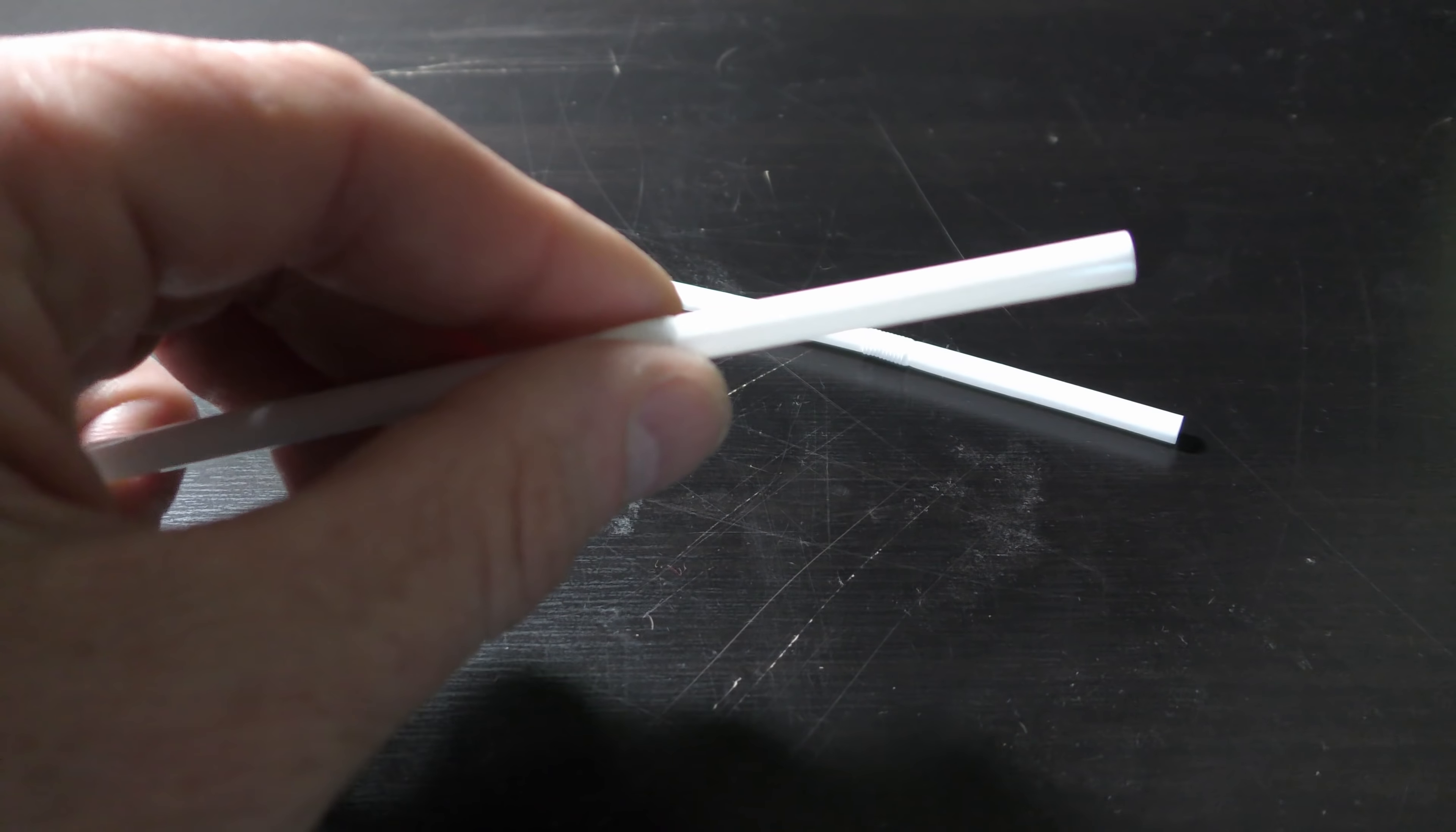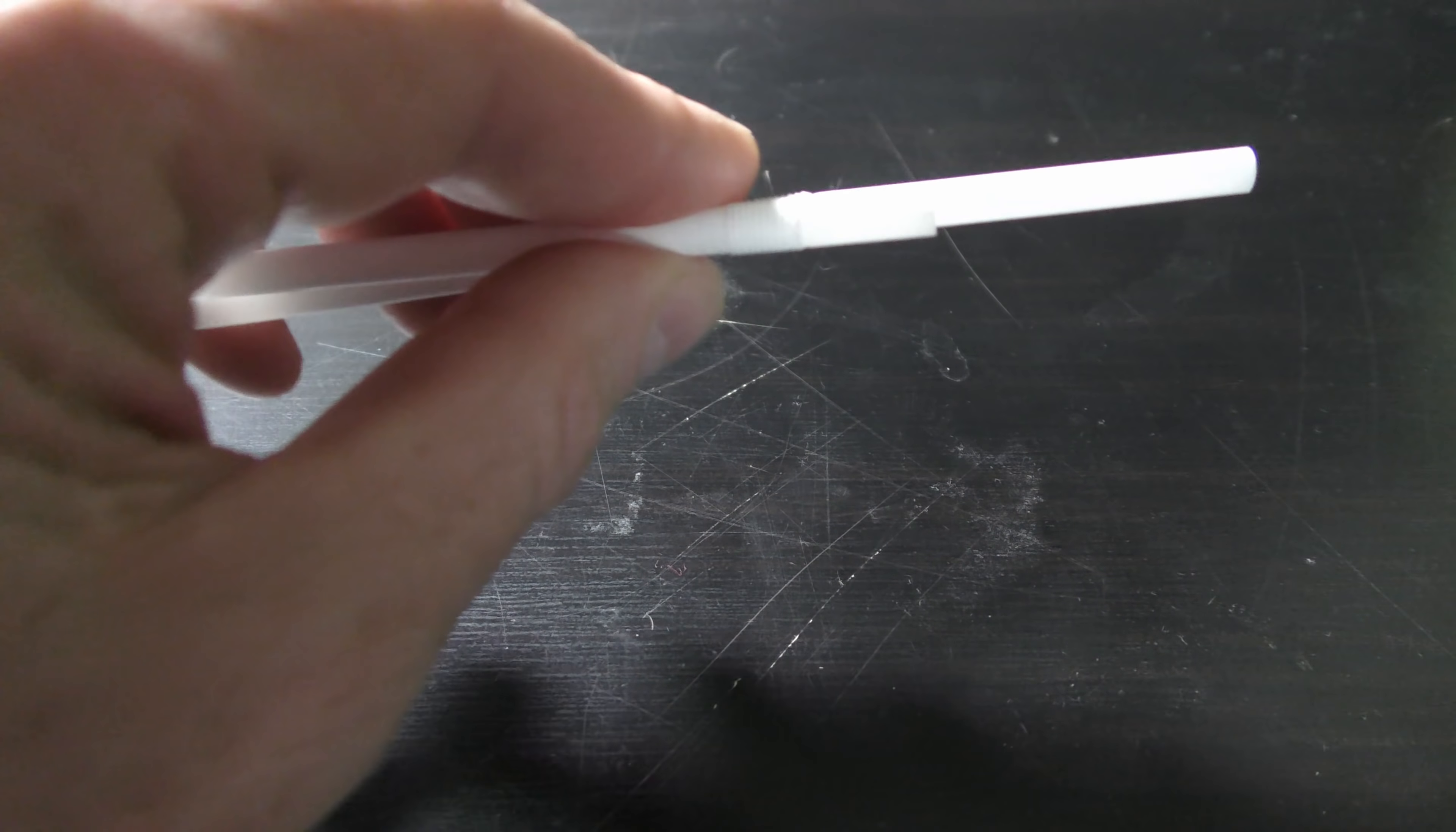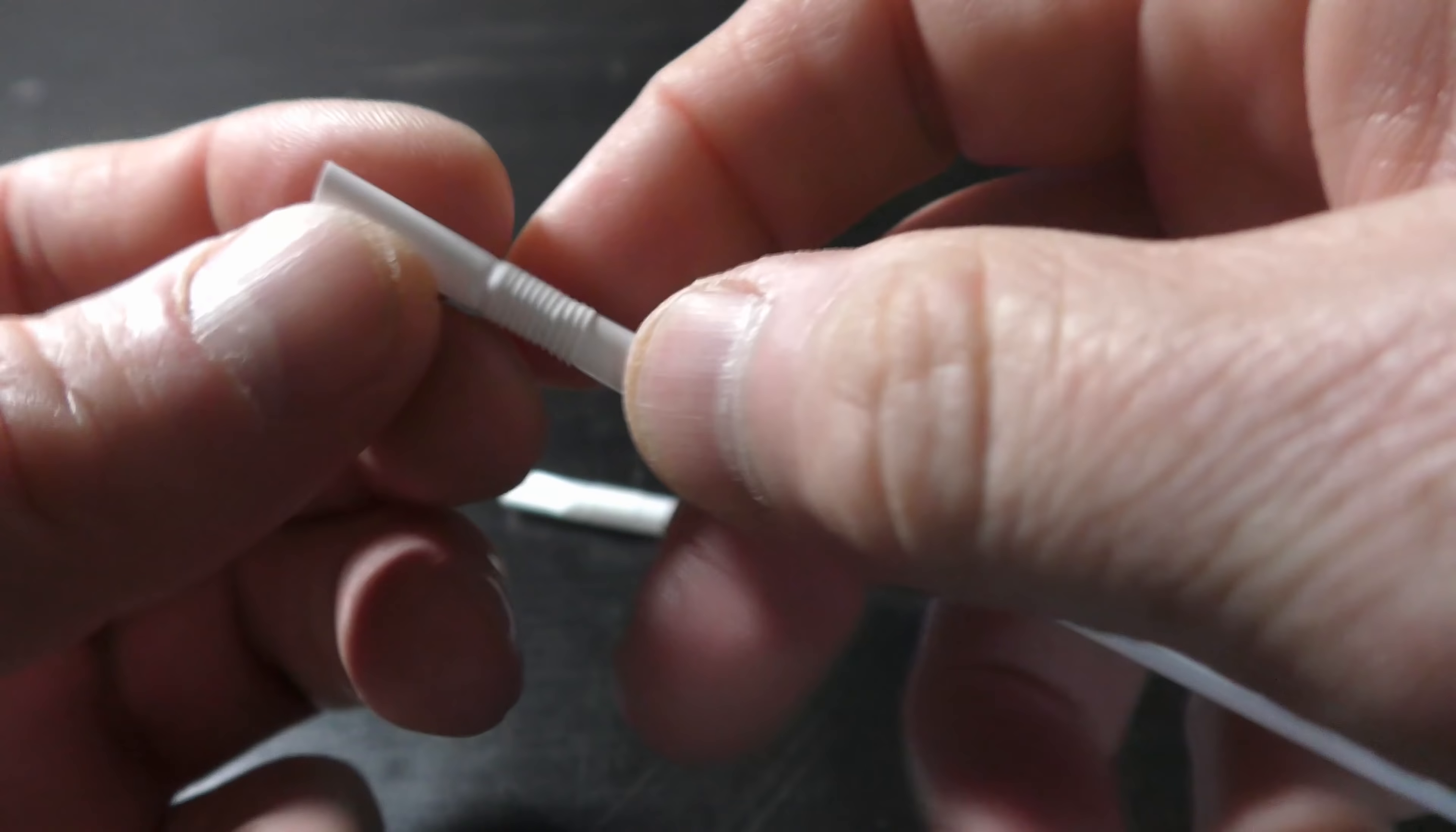Use two or more straws to make a floating frame of a larger size. Use scissors to trim straws if necessary to make the frame a desirable size. Pinch and fold in one end of each straw.